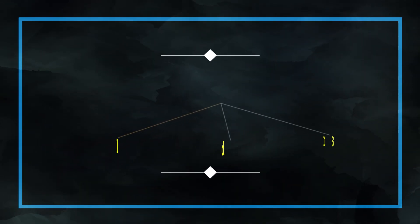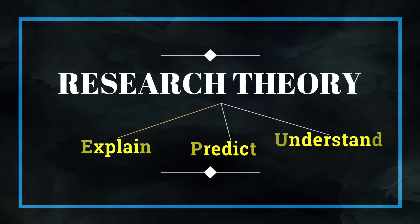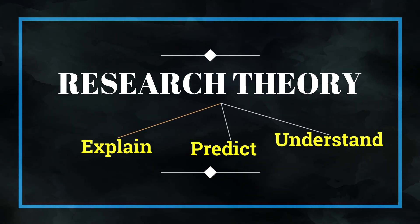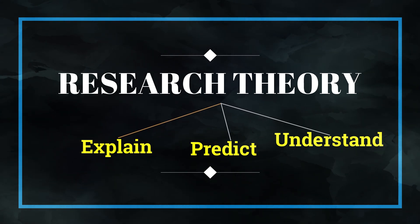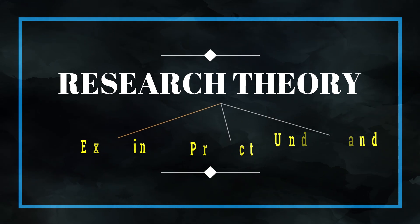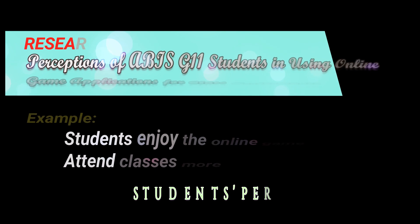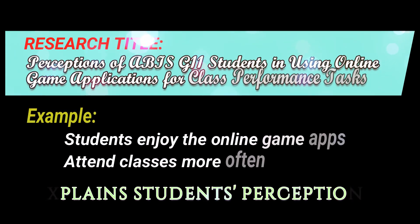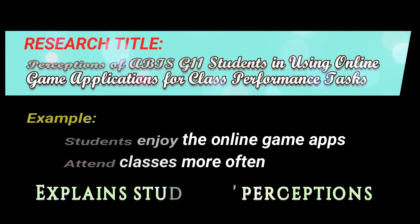Further, research theory is formulated to explain, predict, and understand phenomena, and in many cases to challenge and extend existing knowledge within the limits of critical bounding assumptions. This example theory provided would then help explain why students could possibly enjoy or not the employment of online game applications in a class setting.